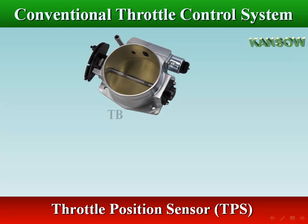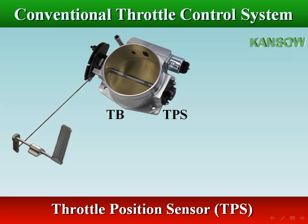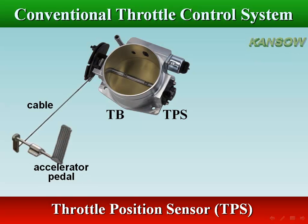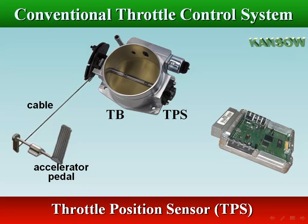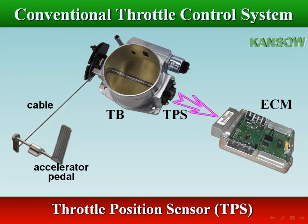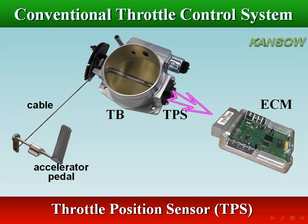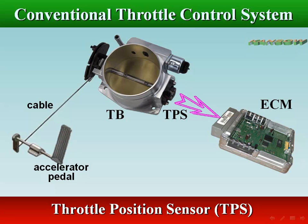The ECM uses the TPS sensor signal as an input to its control system. It precisely controls the best ignition timing and fuel injection timing according to the position of the throttle and the rate of change of that position.